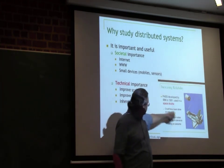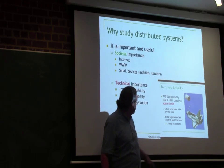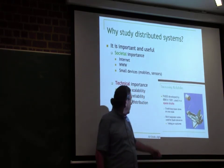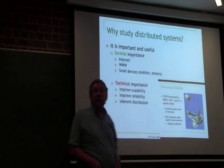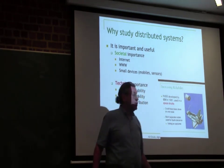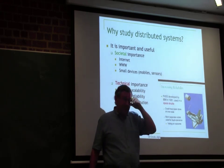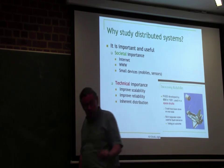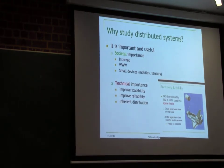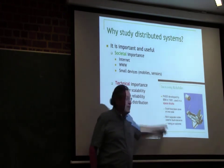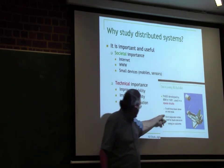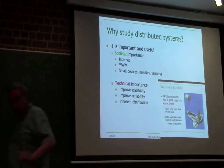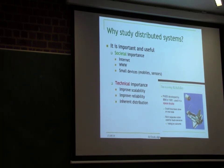Here's a very old example: the space shuttle from 1981. There are four identical computers in there doing the same computation. If one of them crashes, the other three can continue — there's a vote going on. So this is an example of a distributed system. If one crashes, the three will continue to work. The distributed system increases reliability.